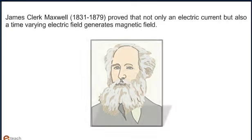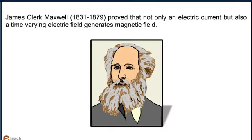James Clerk Maxwell, 1831 to 1879, proved that not only an electric current but also a time varying electric field generates magnetic field.